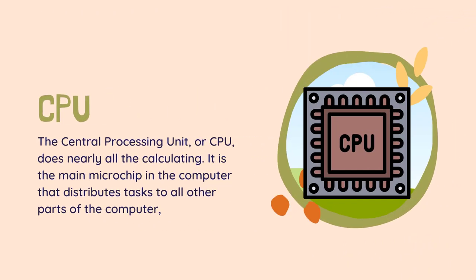The central processing unit, or CPU, does nearly all the calculating. It is the main microchip in the computer that distributes tasks to all other parts of the computer. When most people talk about the processor, or chip, it is actually the CPU they are referring to.